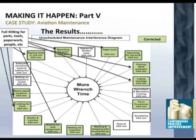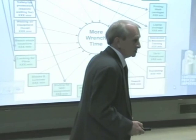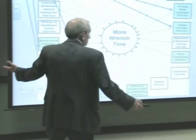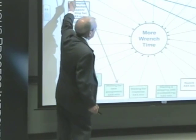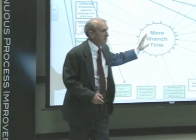Here are some of the things we did from the interference diagram. We went to full kitting for parts — an aircraft was not allowed to pull into a hangar bay until it was fully kitted, meaning it had all the parts, all the tools, all the paperwork, all the resources. That really worked, and following the arrows you can see it took care of a lot of those interferences.